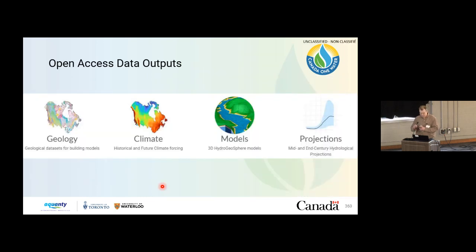The types of data we're generating and providing open access to via the Canada One Water Data Portal include all the geology data with hydrologic parameterizations. We've mined hundreds of studies to get at the hydraulic parameters for different lithologies in different areas of the country. That data is abstracted to a map-based perspective covering surficial, land, and bedrock geology. We also have very good climatology data for precipitation, snowmelt, snow accumulation, and potential evapotranspiration under both historic and future climates. All model input data files are available, and we're also providing the model projections.